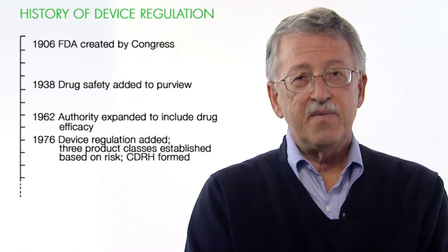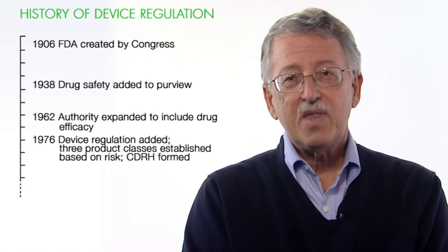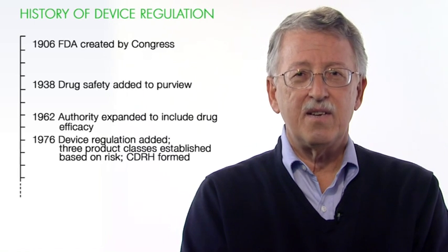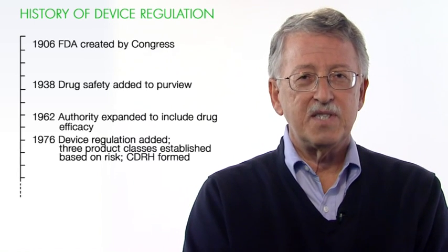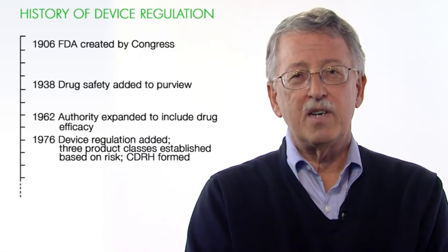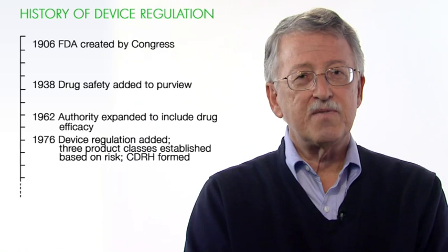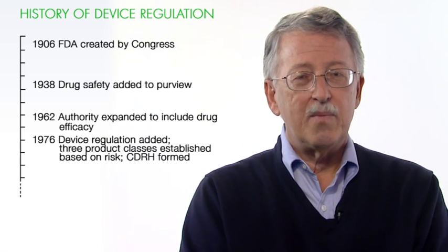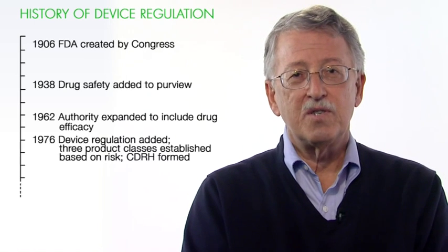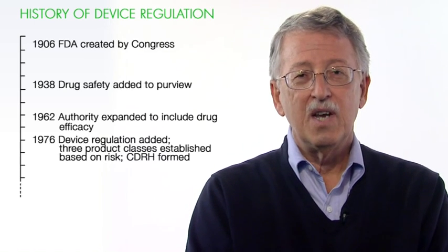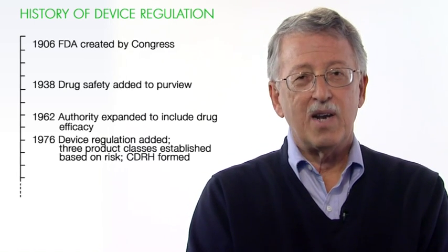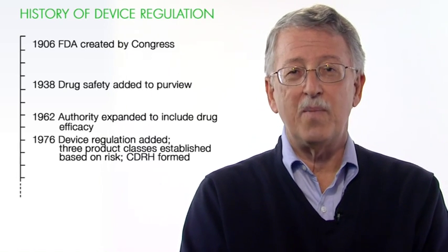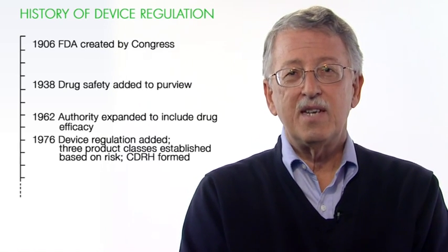There was no specific regulation for devices until 1976. Prior to that time, FDA could take a device off the market if it proved to be unsafe, but they didn't have any authority to prevent devices from reaching the market. So there were products at the time that were so-called cancer cures that used colored lights to cure cancer, and if FDA would try to take that product off the market, the manufacturers would just change the colors and go back on the market again.